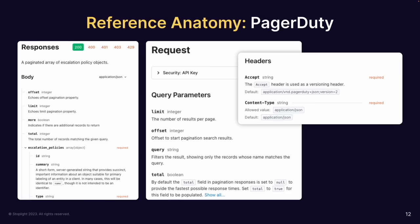In the body section, developers are looking at what information comes back, and every field needs to be described adequately. For instance, offset and limit — most developers would guess pagination. But as we get into escalation policies, 'summary' has a specific meaning: a short-form, server-generated string syncing important information. Field names can have incredible ambiguity, so precise definitions are essential.